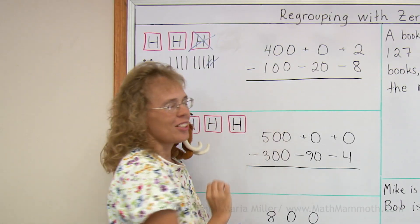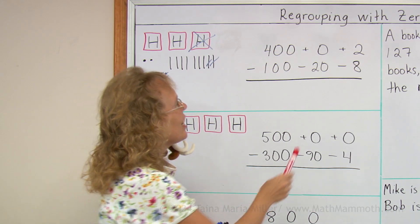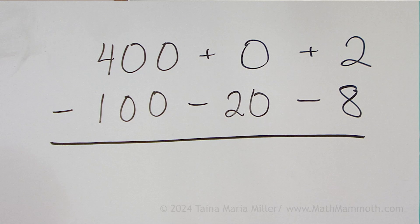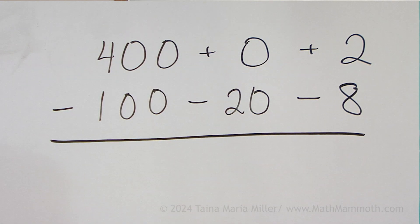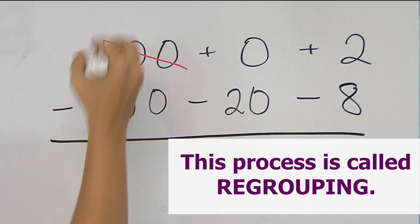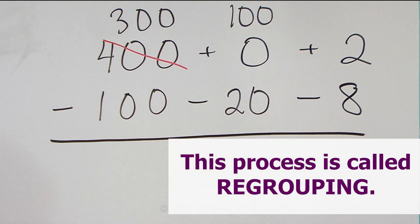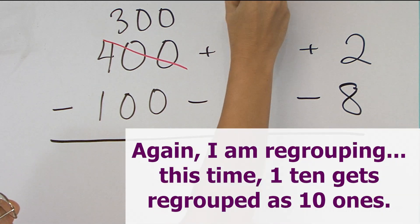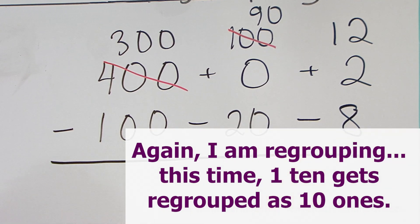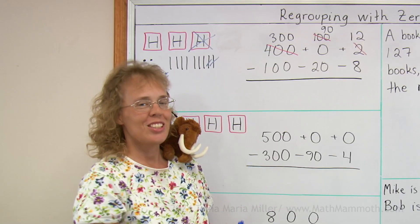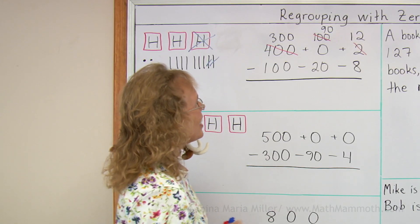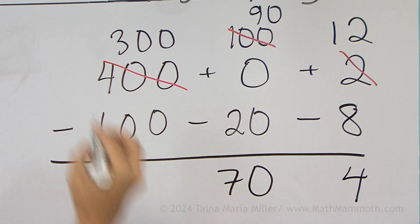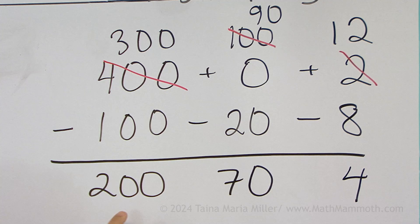Now let's do it using this — the same problem. I cannot subtract 2 minus 8. Normally I would take a 10 from here, but there are none. So I need to go over here to the hundreds and take one of those hundreds, leaving 300 here. That 100 moves here to the tens column, and then I take one 10 from it, leaving 90 here and moving the 10 here. The 10 and 2 together make 12. Now I can subtract: 12 minus 8, 90 minus 20, and 300 minus 100. So the answer is 274.